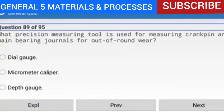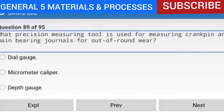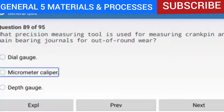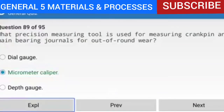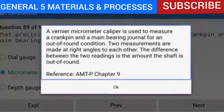Question 89 of 95: What precision measuring tool is used for measuring crankpin and main bearing journals for out-of-round wear? The answer is a micrometer caliper. A Vernier micrometer caliper is used to measure a crankpin and main bearing journal for an out-of-round condition. Two measurements are made at right angles to each other; the difference between the readings is the amount the shaft is out of round.